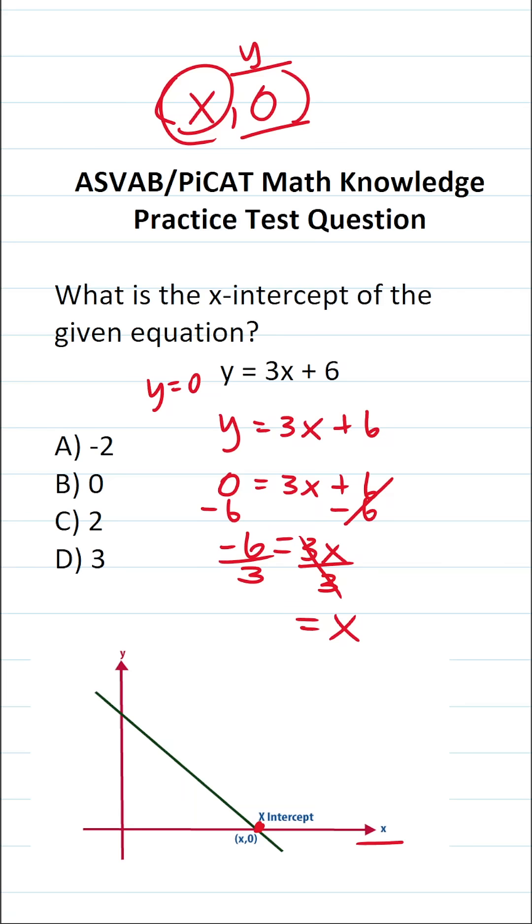Negative 6 divided by 3. Again, a negative divided by a positive is going to be a negative. More specifically, negative 6 divided by positive 3 is negative 2. So we can see x is negative 2.